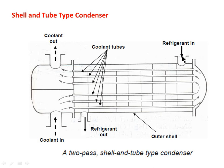The refrigerant enters from one side, and baffles are provided for better circulation of the refrigerant through the shell. The refrigerant moves throughout the entire shell area and exits from the other side. In this way, the heat exchange process between the coolant and the refrigerant takes place in the shell and tube type of condenser.